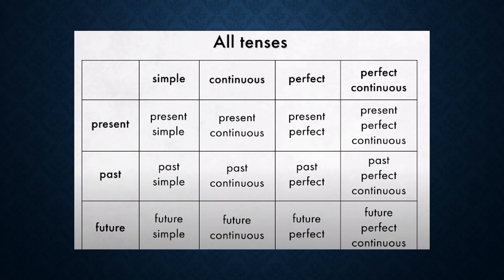Before we get into the lesson, here is a chart showing all of the tenses. There are three types — present, past, and future — and four aspects: simple, continuous, perfect, and perfect continuous. The time and the aspects combine to make all 12 tenses in English. We are going to discuss all of these in this lesson. Let's begin with the first tense: the present simple.